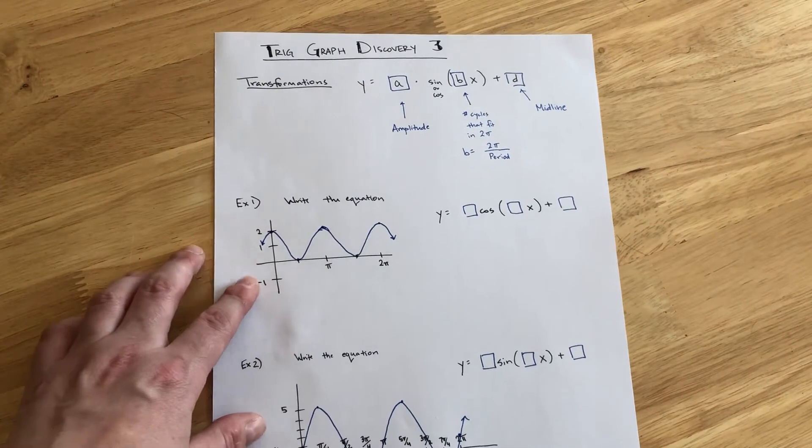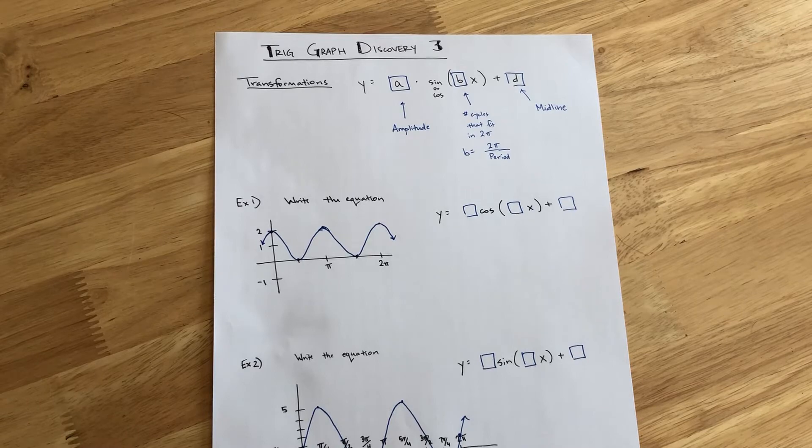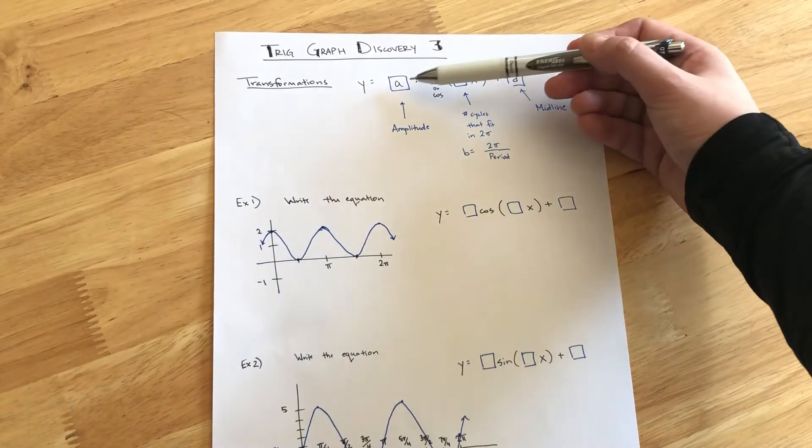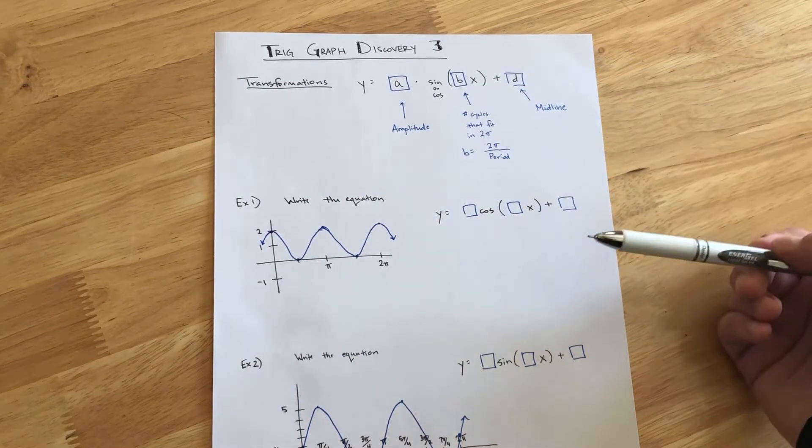So just a quick reminder about trig graphs and the transformations of sine and cosine functions that we saw a couple of days ago. Y equals A times the sine or cosine of B times X plus D on the outside.